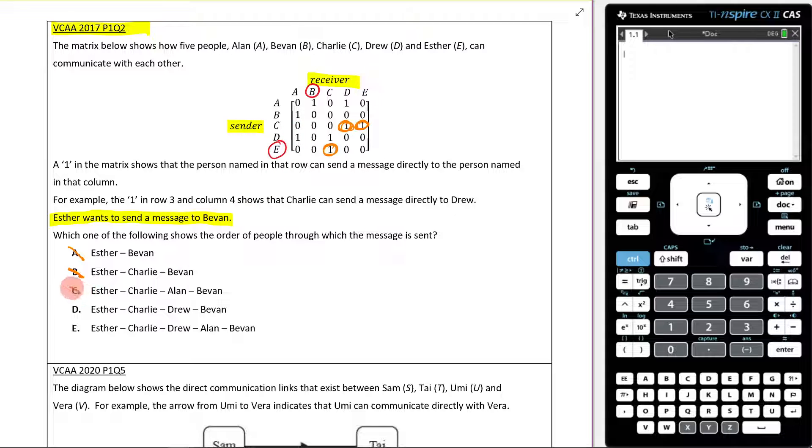Which means either D or E are in play here. As you can see, this is saying that it's Drew and this one is saying it's Drew, so it's not Esther. Charlie is sending it to Drew because there are only two options there.